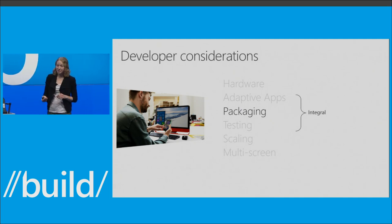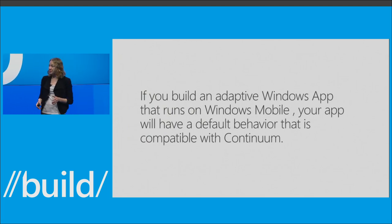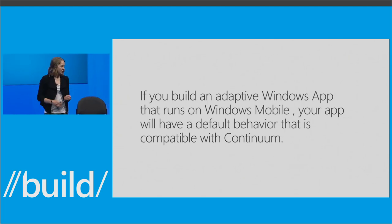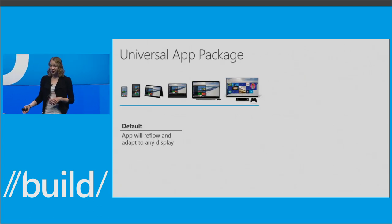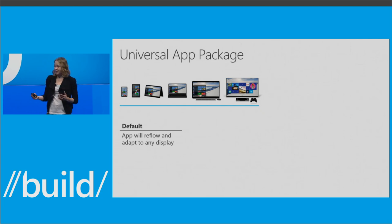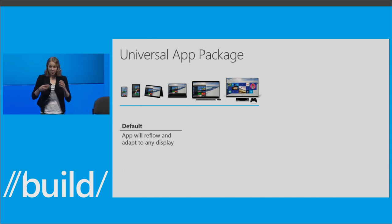Now we've talked about building adaptive apps, let's talk about the different ways you can package your Windows apps to work well on Continuum. If you build an adaptive Windows app that runs on Windows Mobile, your app will have some default behavior on Continuum. The best thing you can do is build a universal Windows app with a universal Windows app package. We're generally assuming you're building an app that adapts across all screens and device families, so you're already doing everything you need for Continuum. Your app should just work. The weather app I showed had no idea Continuum was even a feature when they built their application.